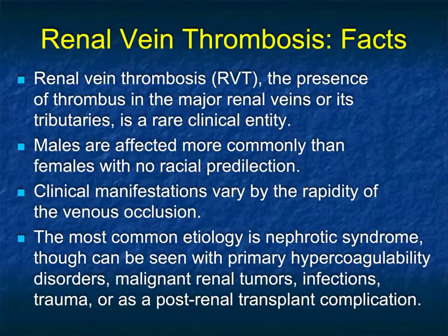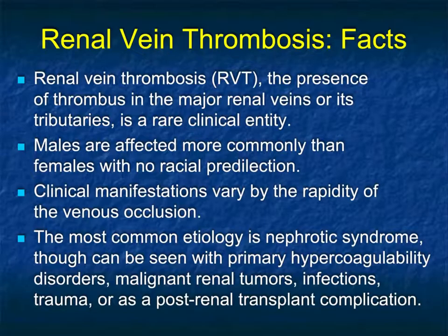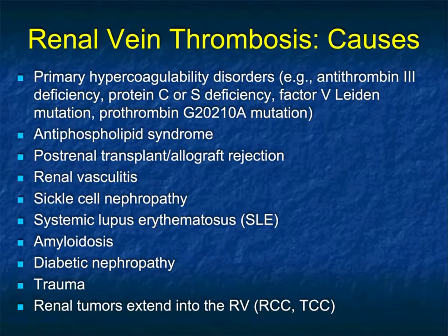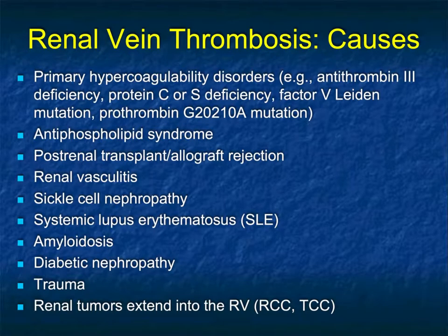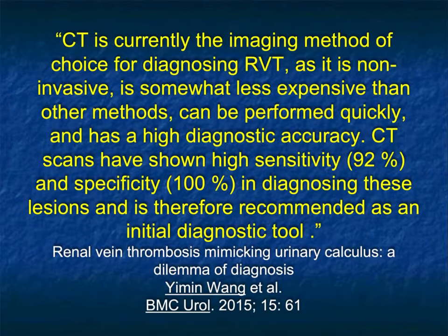Malignant tumors can also cause it. When we look at renal cell carcinoma or even TCC, we look for extension of tumor into the renal vein and follow it to the IVC. Infection, trauma, or post-renal transplant complications are all possibilities. The differential diagnosis is quite extensive: transplants, vasculitis, sickle cell, lupus, amyloid, diabetic nephropathy, and more. Clinical history is important, but imaging findings are typically what allows us to make the correct diagnosis.